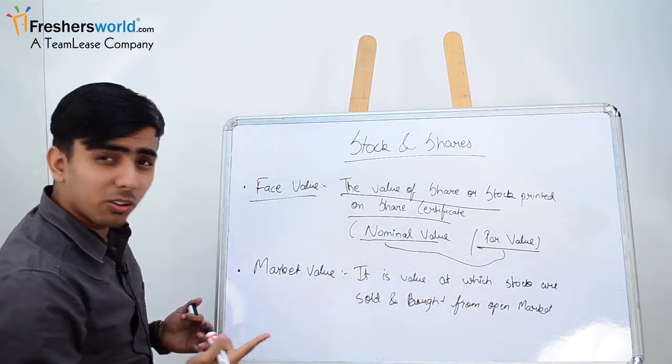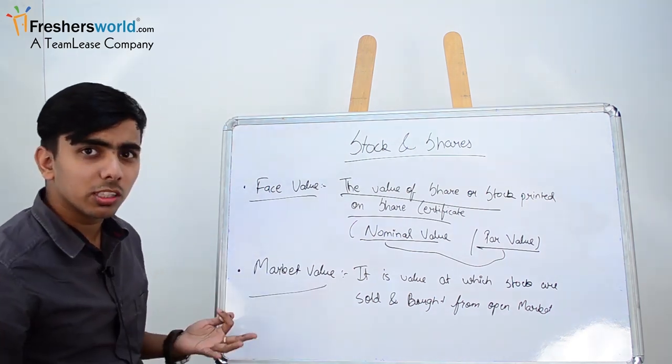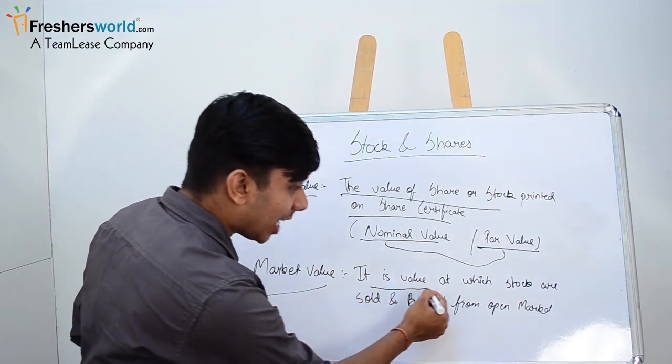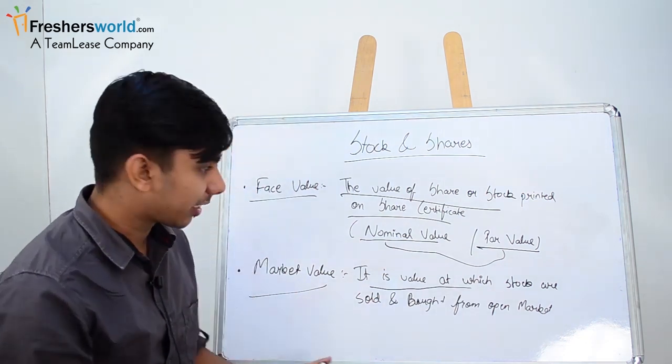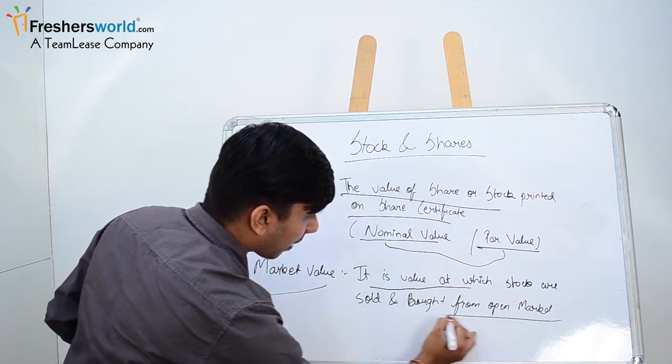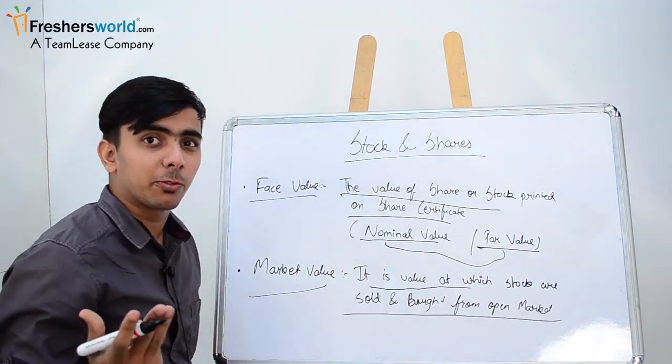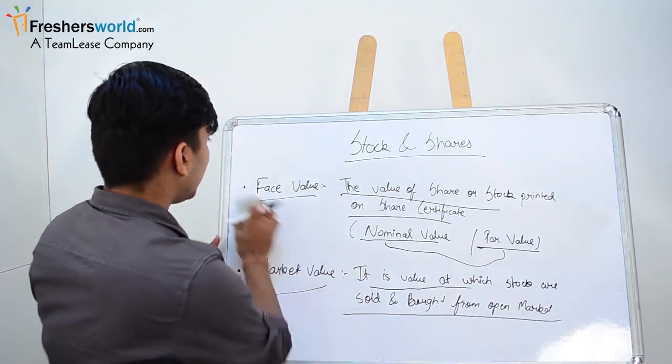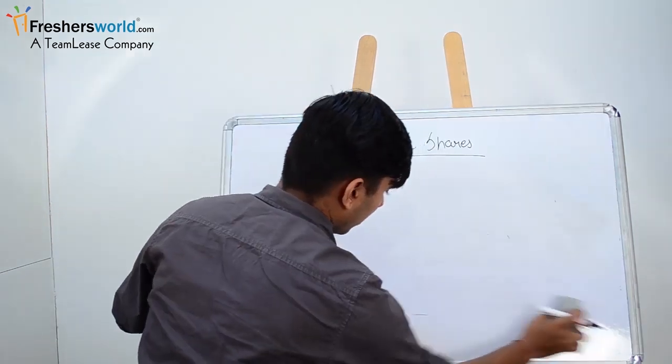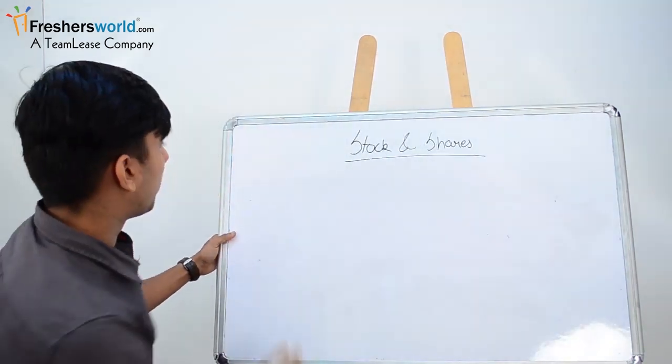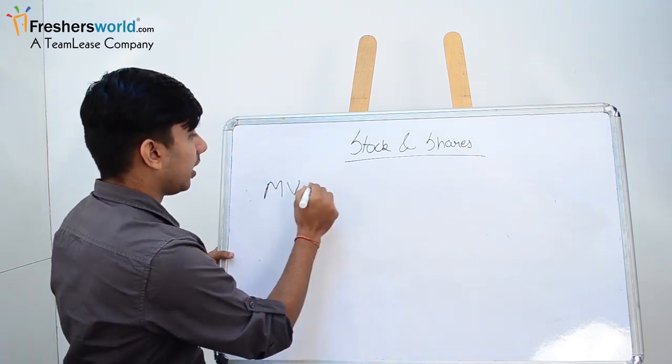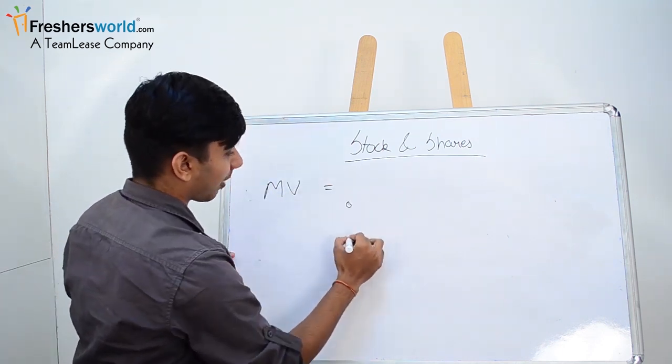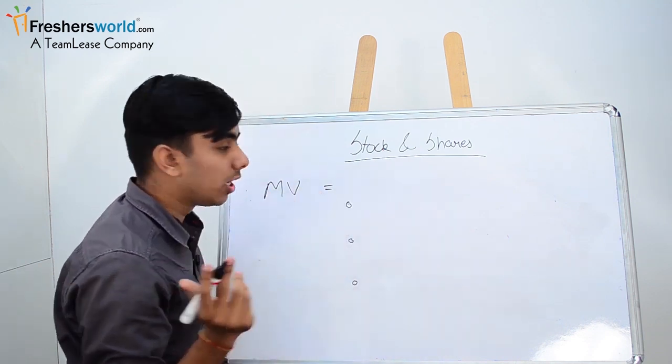The second thing is market value. What is market value? It is the value at which stocks are sold and bought in the open market. Now in market value, there are three types of market value which I will show you now. Please pay attention here.